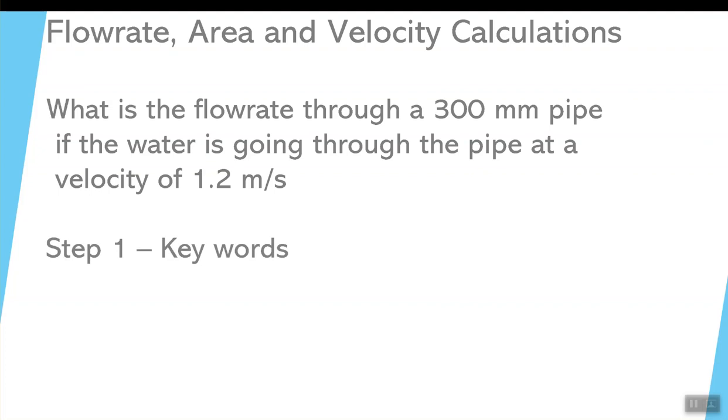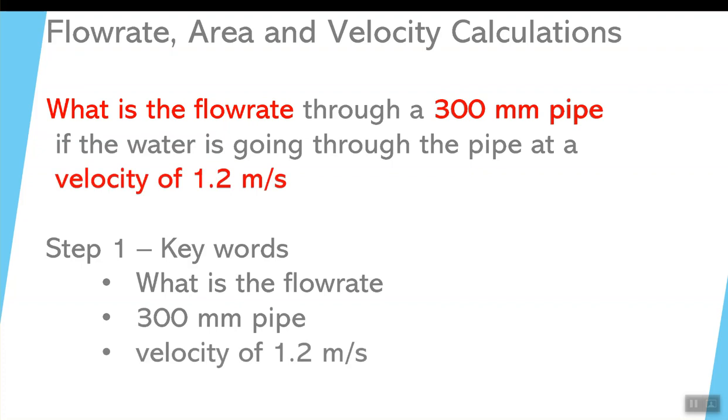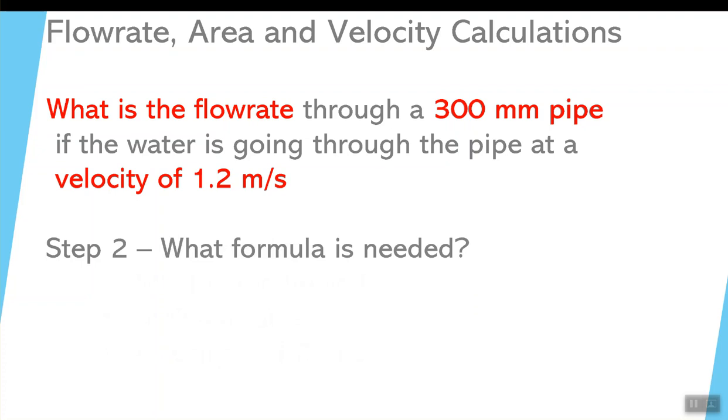Like every one of the previous questions we've looked at, we look for keywords. The first keyword is flow rate. One thing that you must remember about flow rates, when you go through this formula, it has to be in meters cubed per second. What else is in this particular question? Well, 300 millimeter pipe, that's a diameter of the pipe. And lastly, the velocity is given as 1.2 meters per second.